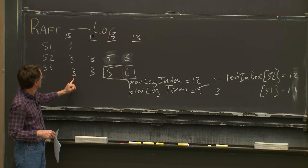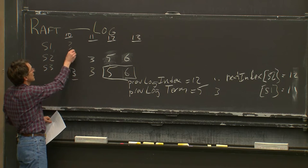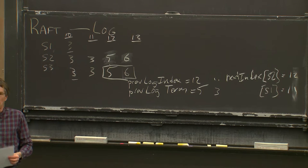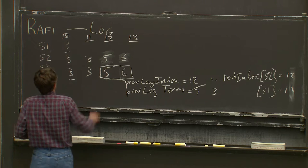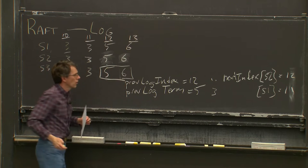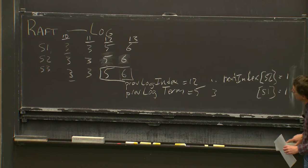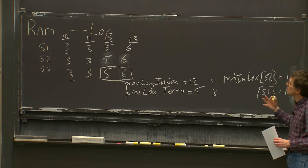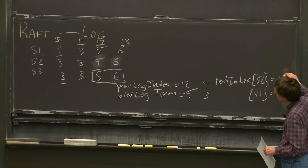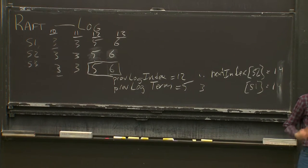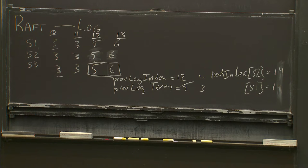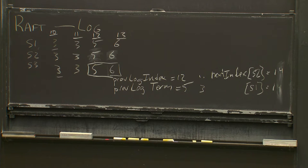The server sends out its log starting there with the previous index and term referring to that slot, and this is acceptable to server 1. Server 1 will accept the new log entries and send a positive response back. Now they're all caught up. When the leader sees that followers accepted AppendEntries with a certain number of log entries, it increments next index to 14 for both. The net effect is that the server used the backup mechanism to detect where the followers' logs started to equal the leader's log, then sent each follower the complete remainder of the leader's log from that point.